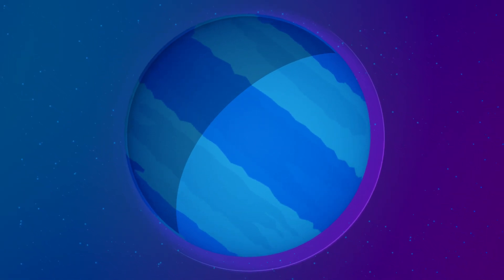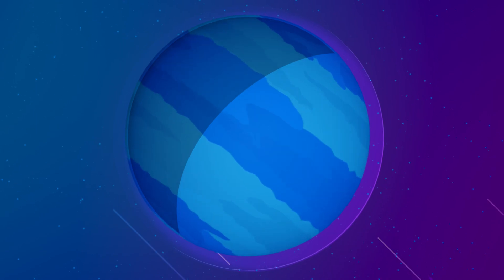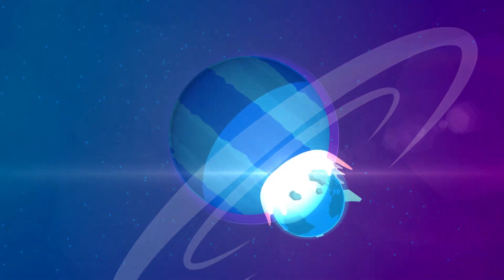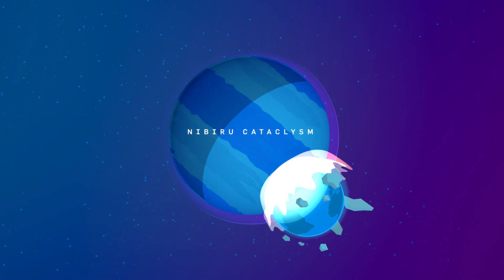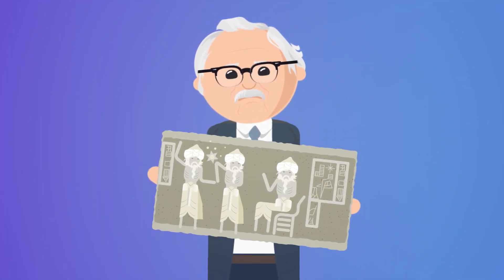But don't confuse it with fictional objects of the same name. Take, for instance, the unscientific prediction known as the Nibiru Cataclysm, which falsely warns that Earth will collide with a celestial object, also called Planet X, sometime in the 21st century.